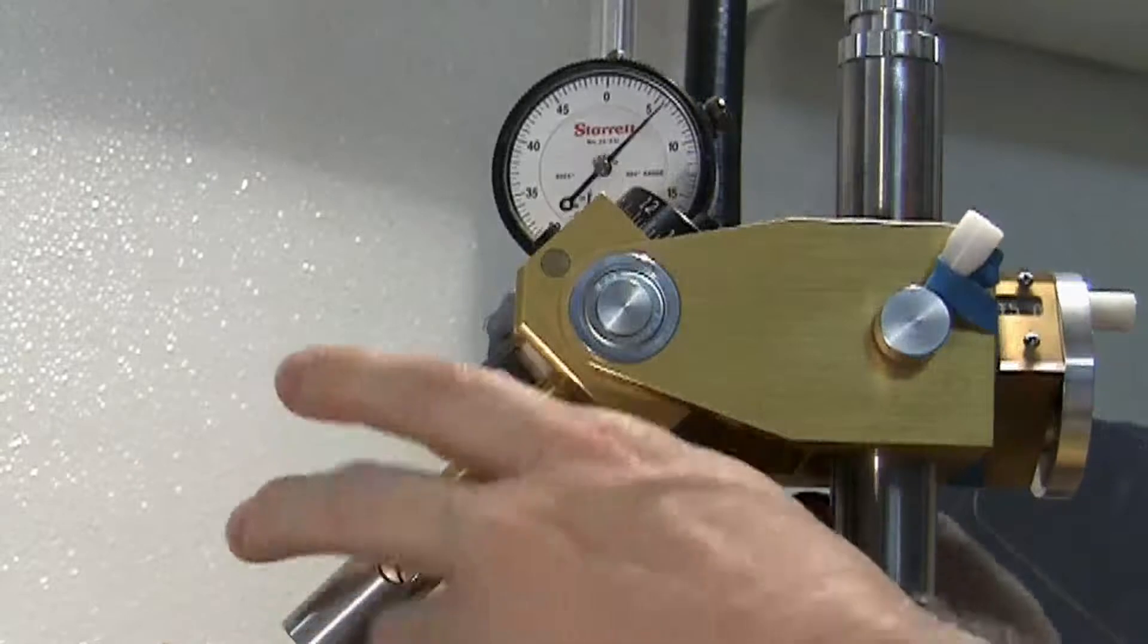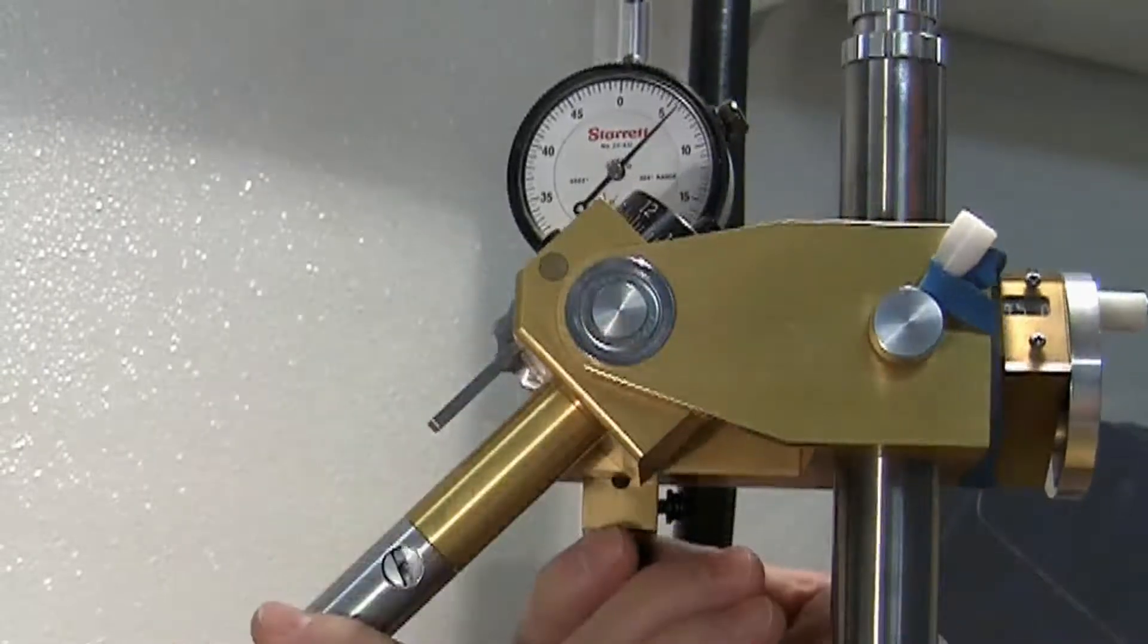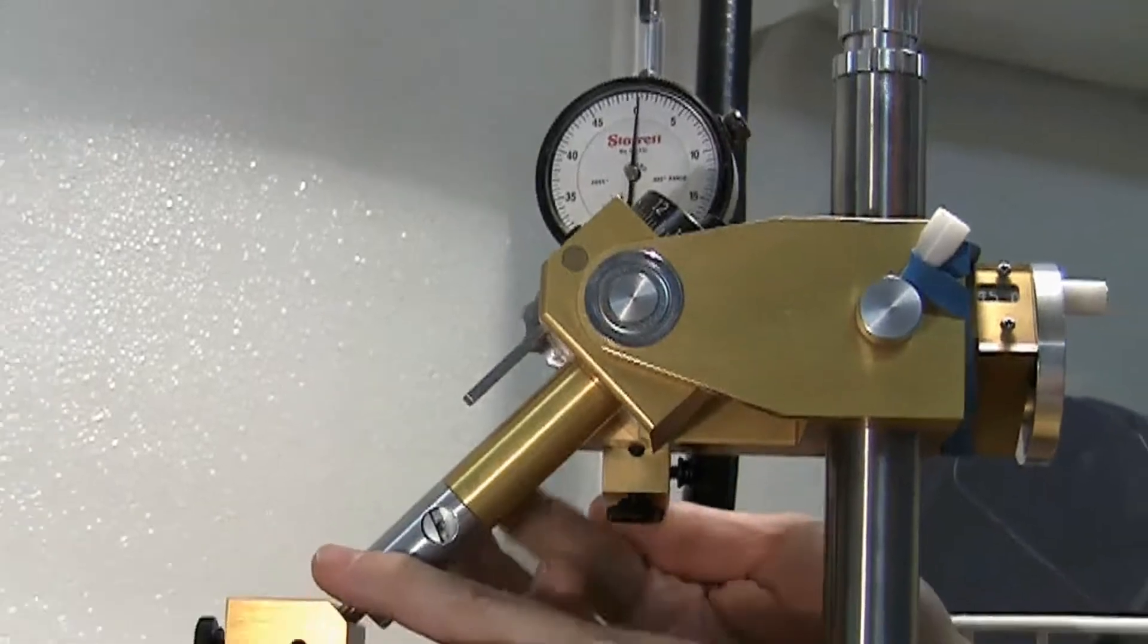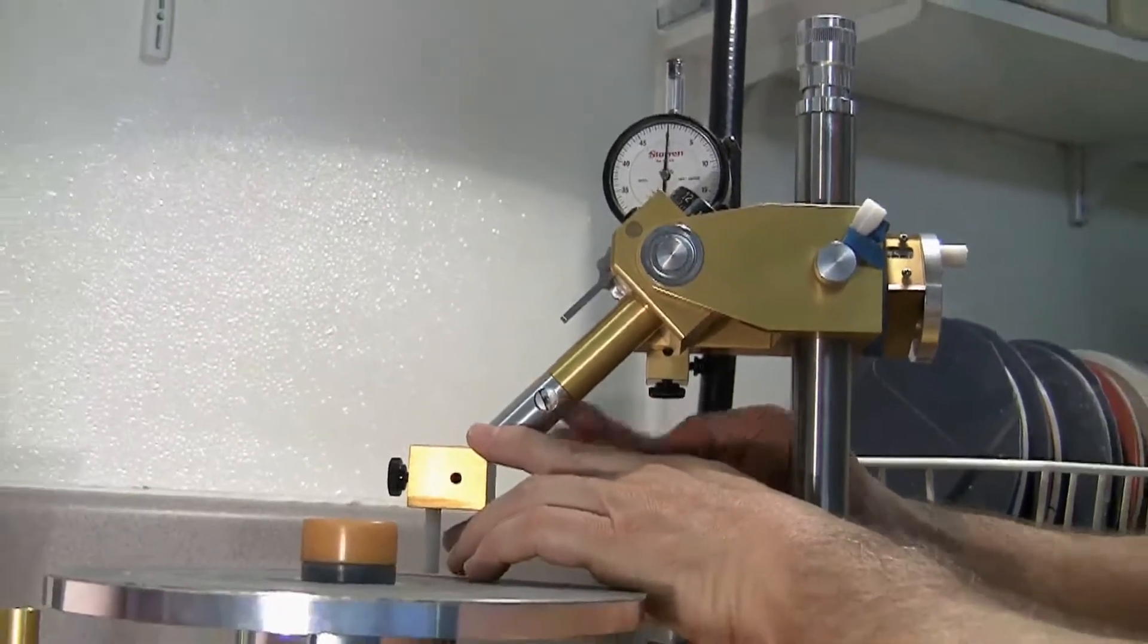If we want to stop the travel of the quill, we just turn the adjustment screw to the right until the needle comes up to the zero. Now we're going to stop right on the angle.